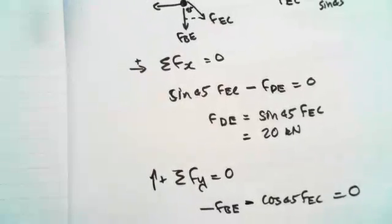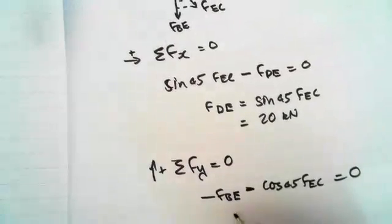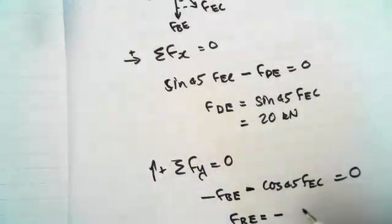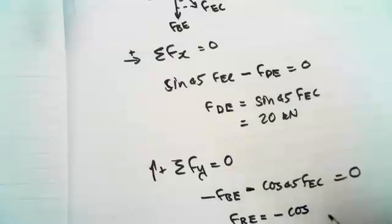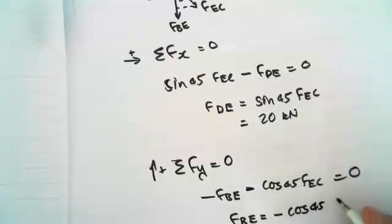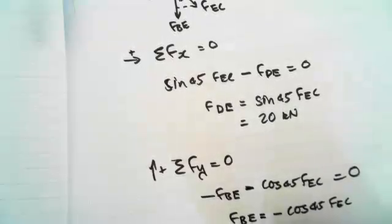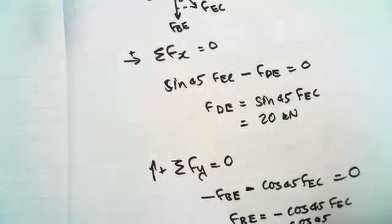And then you can see, let me just work out what FBE is. FBE equals negative cos 45 FEC, which equals negative cos 45 on sine 45.